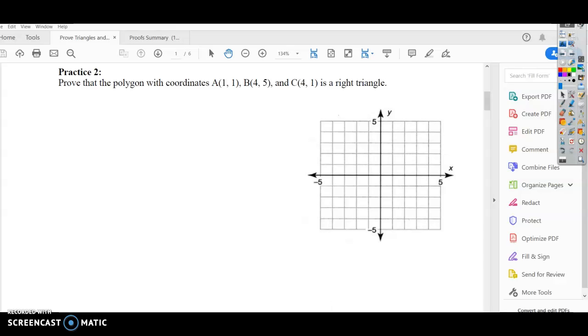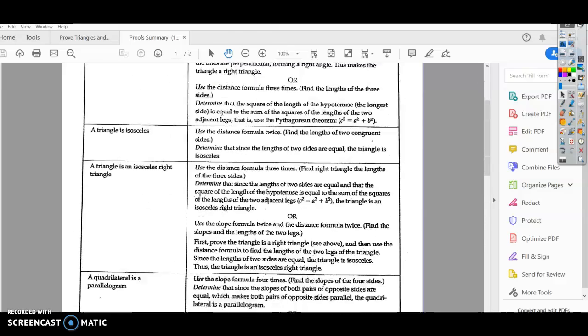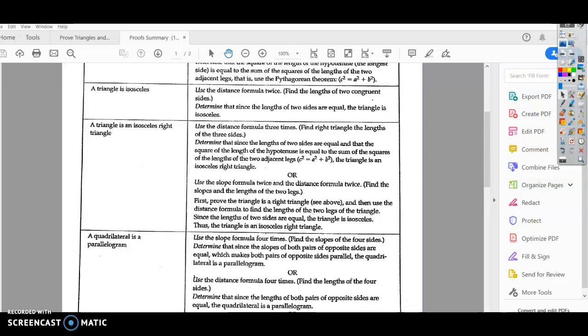So you're going to go back to your reference sheet again. Scroll up and down your summary page here. A triangle is an isosceles right triangle. So there's a couple different things you can do here. Use the distance formula three times. Find the length of the three sides.